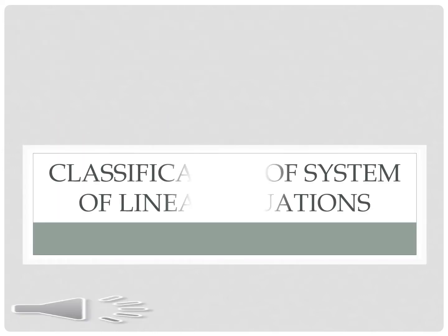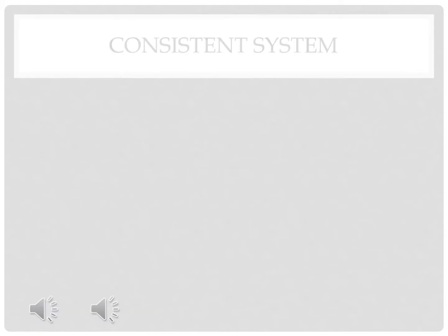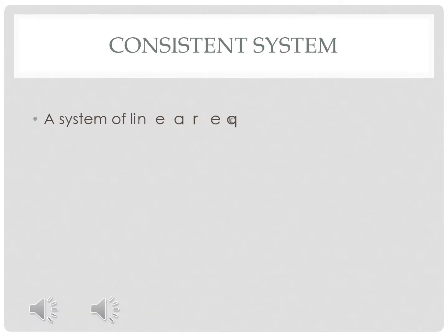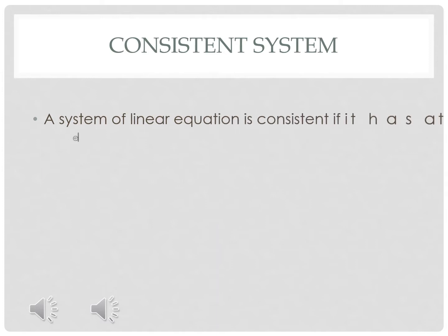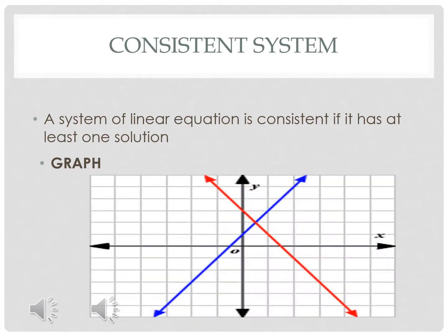There are three classifications of system of linear equations. The first one is consistent system. A system of linear equations is consistent if it has at least one solution. This is the graph of a consistent system.